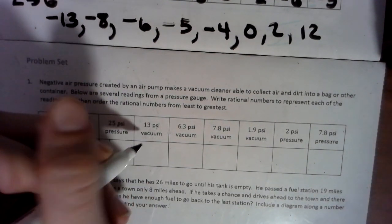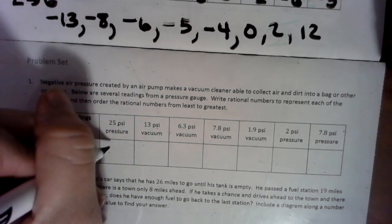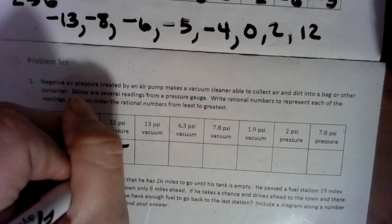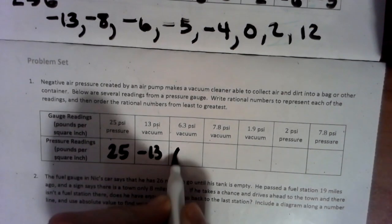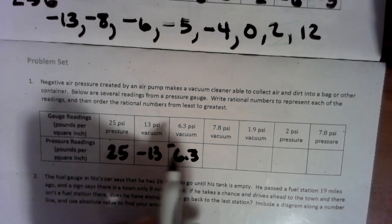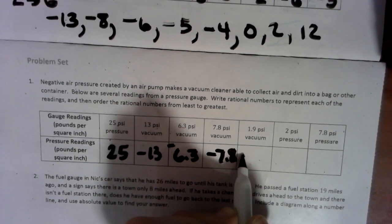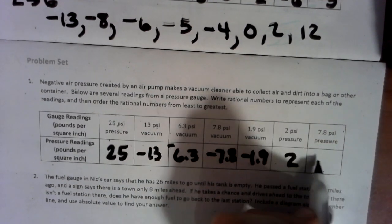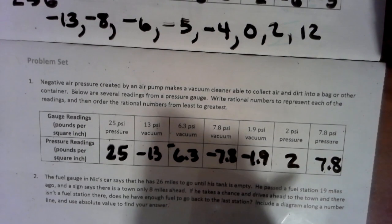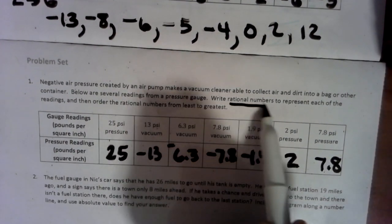Obviously, the vacuuming is sucking stuff up, so that's negative for that stuff. So 25 pressure is positive 25, where vacuuming is negative 13, 6.3 tenths is negative, negative 7.8, negative 1.9, positive 2 and positive 7.8.